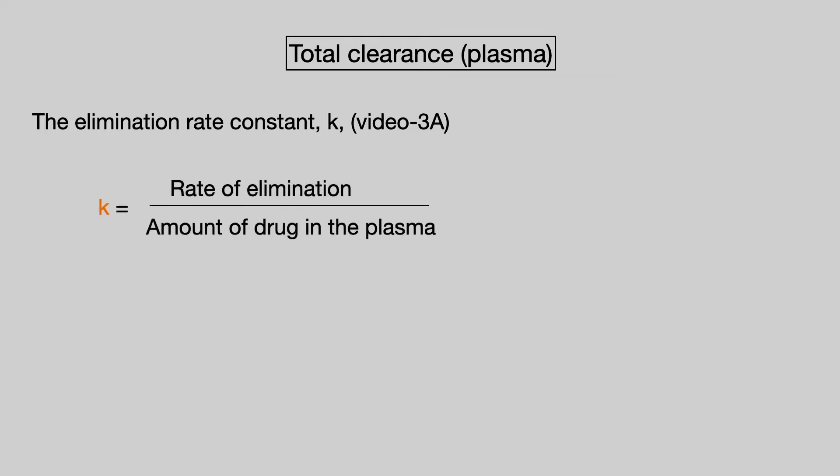First, we're going to look at total clearance measured in plasma. The elimination rate constant K was introduced in Video 3a. It can be expressed as the rate of elimination divided by the amount of drug in plasma. The rate of elimination and the amount of drug in plasma is given by its volume of distribution, as covered in Video 6. Therefore, clearance equals the volume of distribution multiplied by the elimination rate constant.